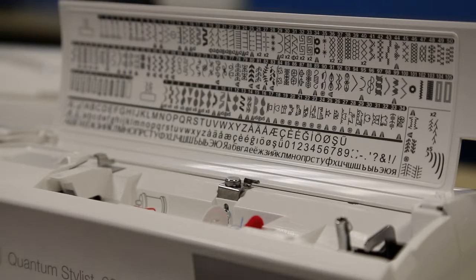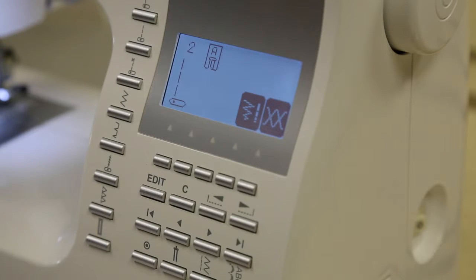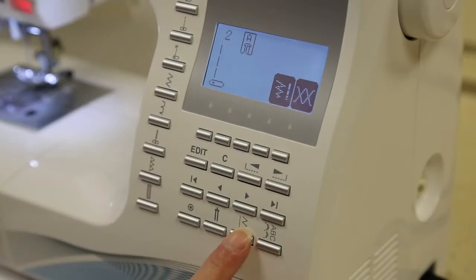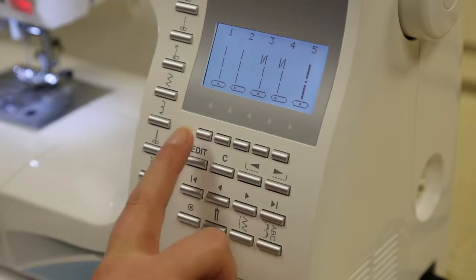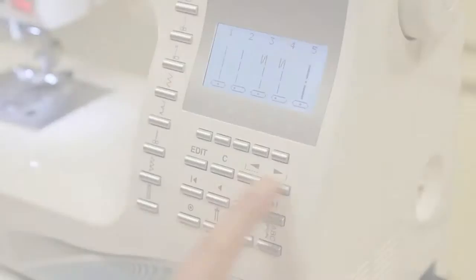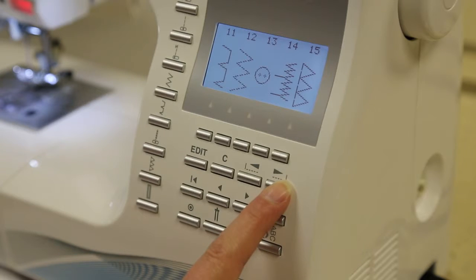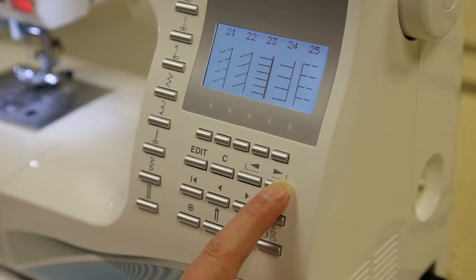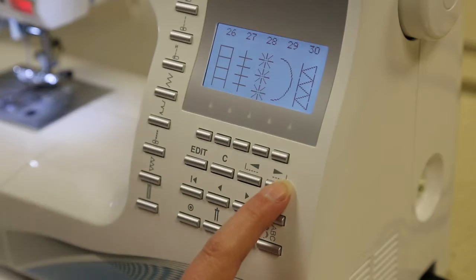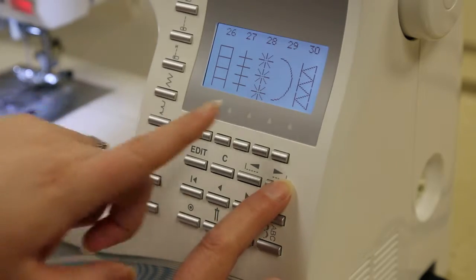Utility stitches are indicated in a pattern chart inside the top cover. When the machine is turned on, the straight stitch is automatically selected. If you want to choose a different pattern, press the utility button. You can use the buttons to scroll back and forth to see additional patterns. To select a pattern, press the function button directly under the pattern you want.